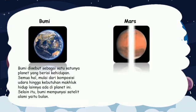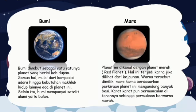4. Mars. Planet ini dikenal dengan planet merah atau red planet. Hal ini terjadi karena jika dilihat dari kejauhan, warna merah tersebut dimiliki Mars, karena planet ini mengandung banyak besi. Karat-karat pun bermunculan di tanahnya sehingga permukaan berwarna merah.